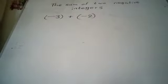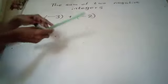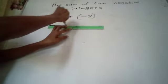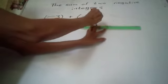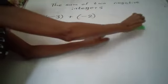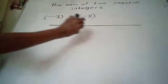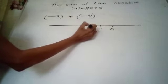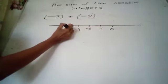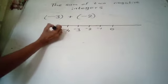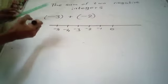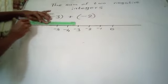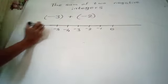First, starting from 0, we draw a straight line segment and mark 0, negative 1, negative 2, negative 3, negative 4, negative 5, negative 6.